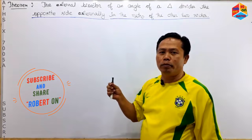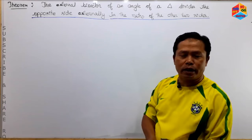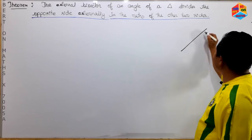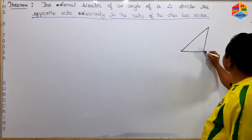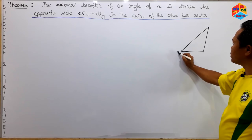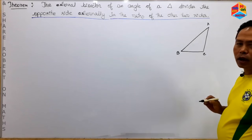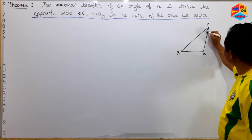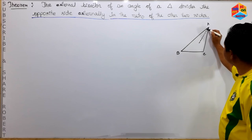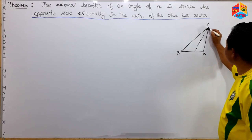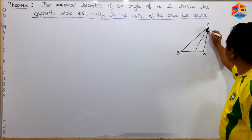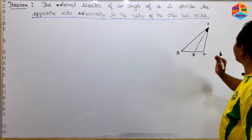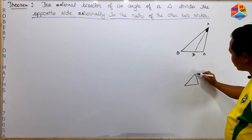If you have a problem with the internal and external bisector, you can see that there is an internal bisector. If you have a triangle, you can see that there is an internal bisector. If you have an internal bisector, you can see that there is an internal bisector. If you have an external bisector with an external bisector, you can see.